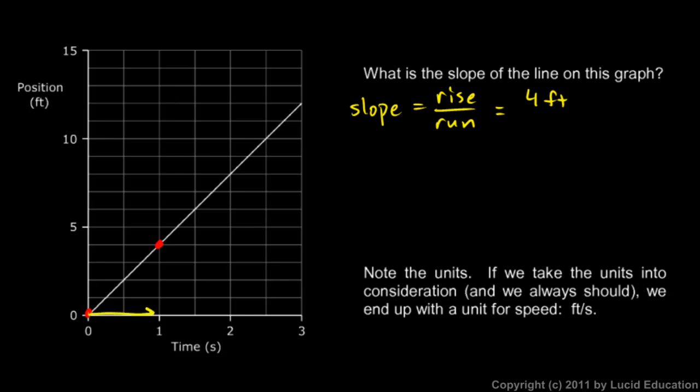And the run here, how far over it goes, is one. And that's one second. So the run is one second. So the slope is four feet over one second, which is, the four over the one, we can just write as four. And that's feet per second.